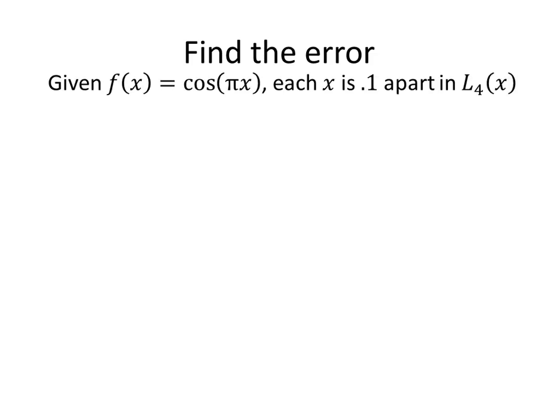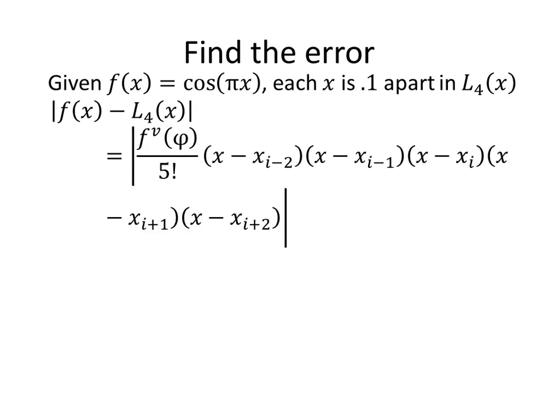Find the error. Well given our function f(x) equals cosine of pi x, and we know that each x is 0.1 distance apart, we'll go ahead and use our original formula, only this time tweaked a little bit, because we weren't given exact points. All we were given was that each one is about 0.1 apart. So if we try to maximize the error as a greater approximation, then we can say that since each of them is 0.1 apart, the most that each of those terms could be is about 0.4.